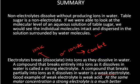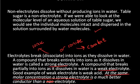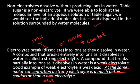Electrolytes break into ions as they dissolve in water. A compound that breaks entirely into ions as it dissolves in water is called a strong electrolyte. A compound that breaks partially is a weak electrolyte. A good example of a weak electrolyte is a weak acid.